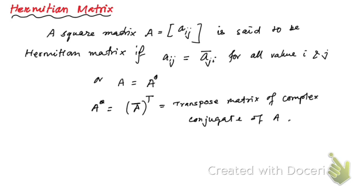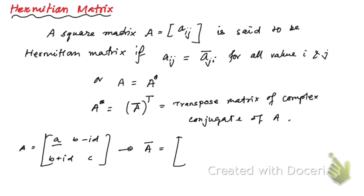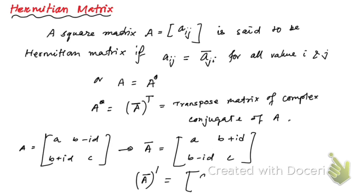Let me give you an example. Suppose you have a matrix A given by [a, b−id; b+id, c]. If you take the complex conjugate, the real entries stay the same, b−id becomes b+id and vice versa. If you then take the transpose of that conjugate, you get [a, b+id; b−id, c], which is the same as the original matrix A. That's why this is a Hermitian matrix.